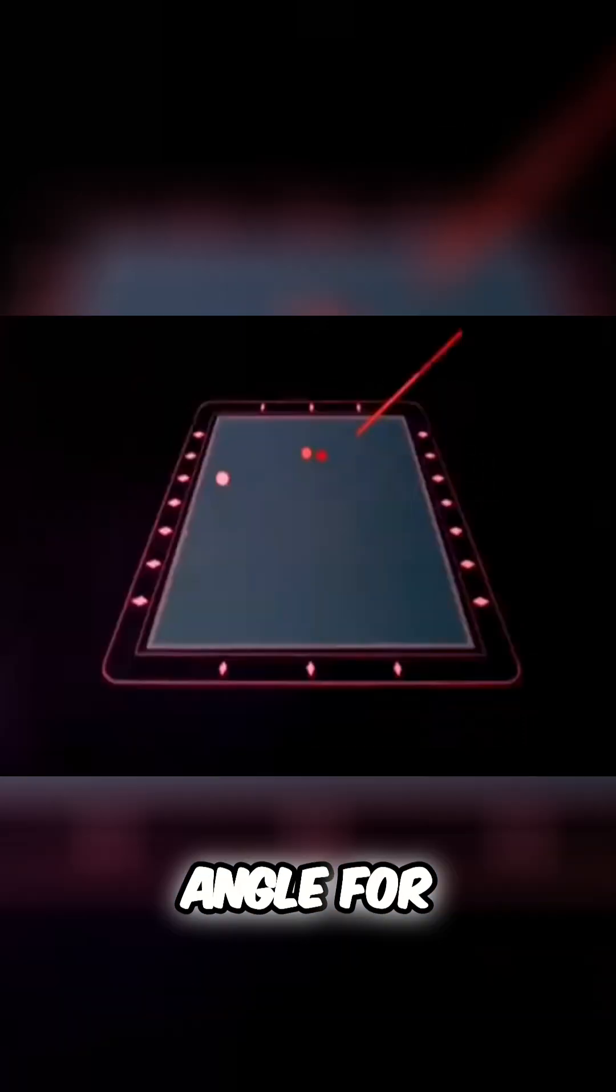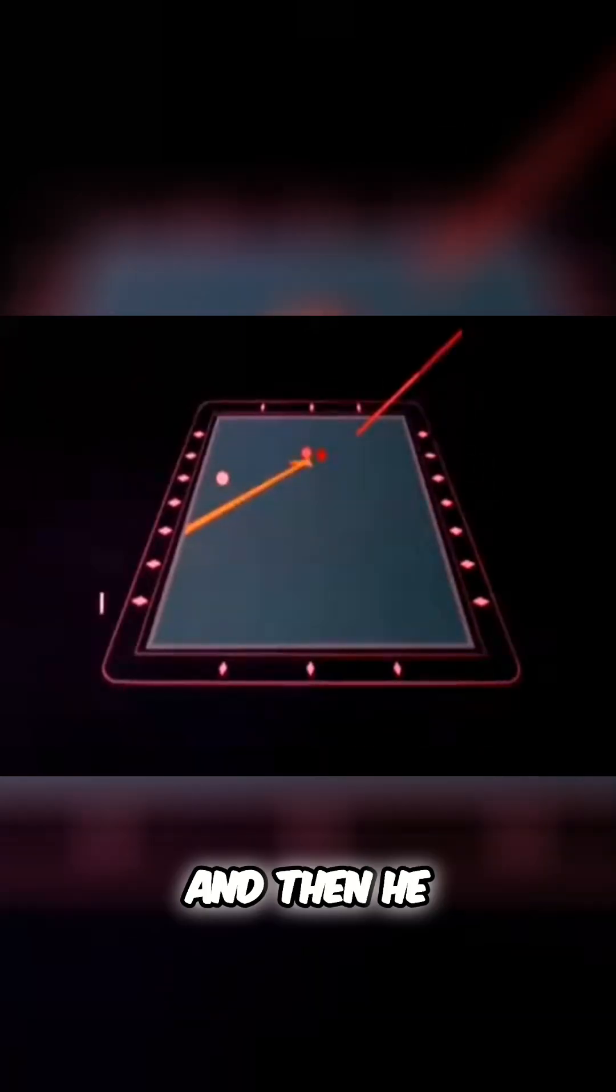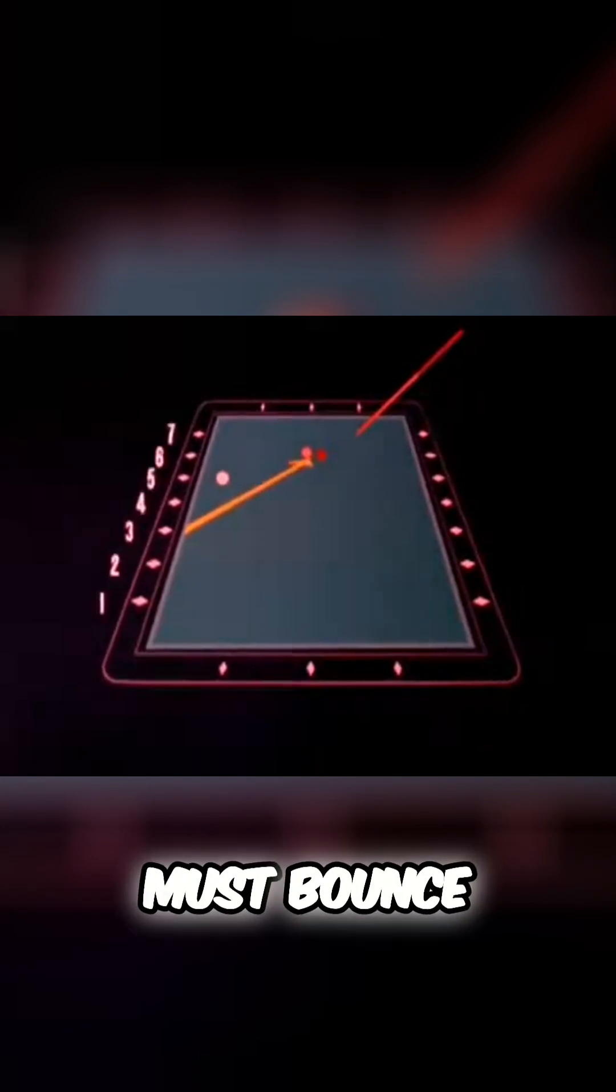First, he figures the natural angle for hitting the object balls. And then he finds that his cue ball must bounce off the number three diamond.